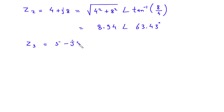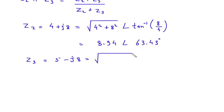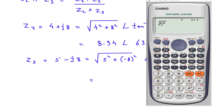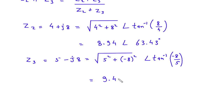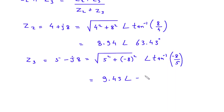Now Z3 is 5 minus J8. This is in rectangular form, so its equivalent polar form will be under root of 5 squared plus 8 squared at an angle of tan inverse of minus 8 by 5. That gives 9.43 at an angle of minus 58 degrees. This is the value of Z3 in polar form.